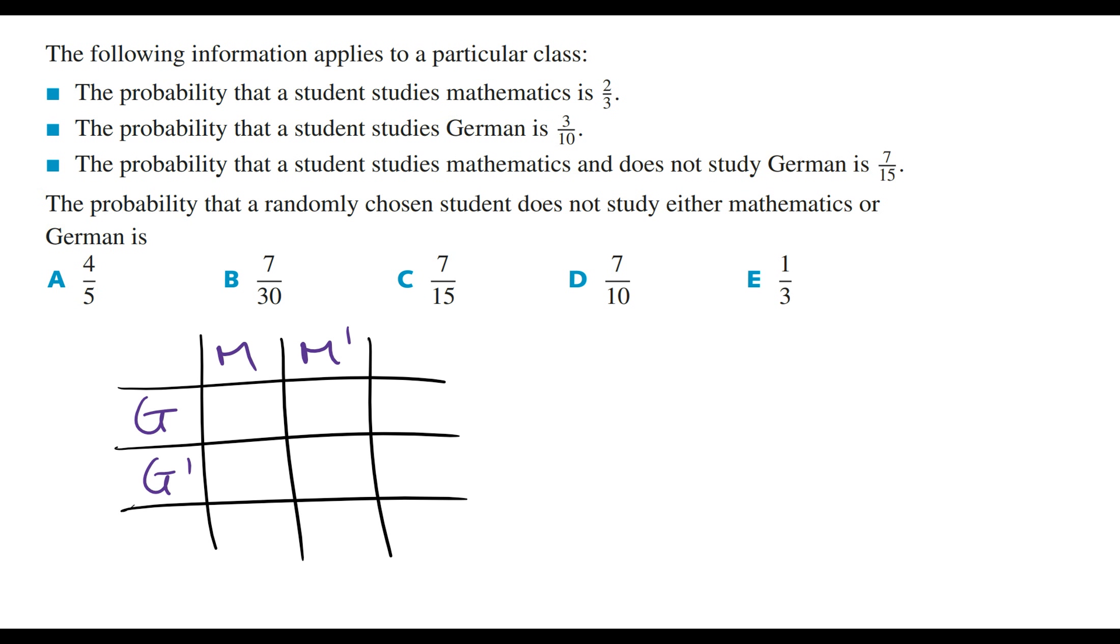We're told that the probability that a student studies maths is 2 on 3, and so this box is going to equal 2 on 3. We're told that the probability that a student studies German is 3 on 10, and so this box is going to be 3 on 10.